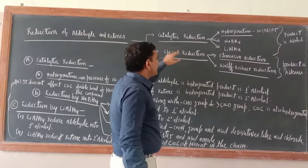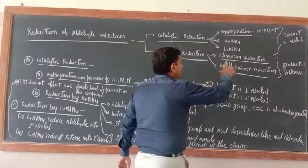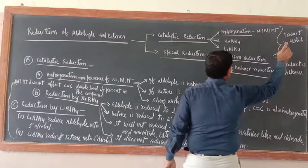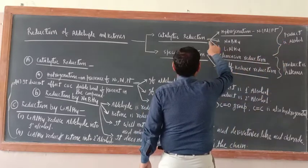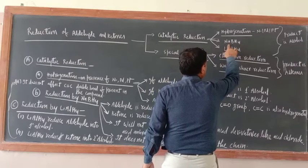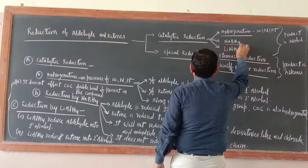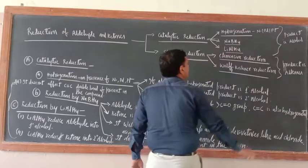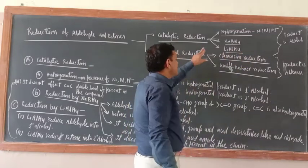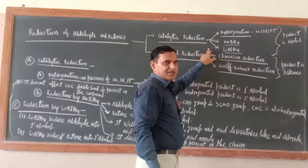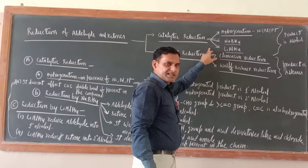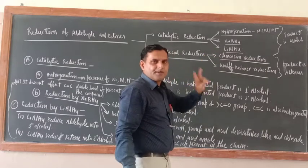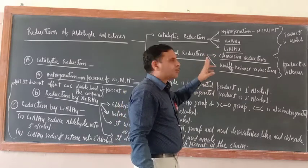Keeping all those things in mind, I have categorized the reduction reaction of aldehydes and ketones into two categories: catalytic reduction and special reduction. Catalytic reduction means hydrogenation of aldehydes and ketones in presence of nickel, palladium, and platinum. The second one is reduction in presence of sodium borohydride, and the third is reduction in presence of lithium aluminium hydride. In all three cases the product is alcohol only — aldehyde reduction gives primary alcohol, ketone reduction gives secondary alcohol.